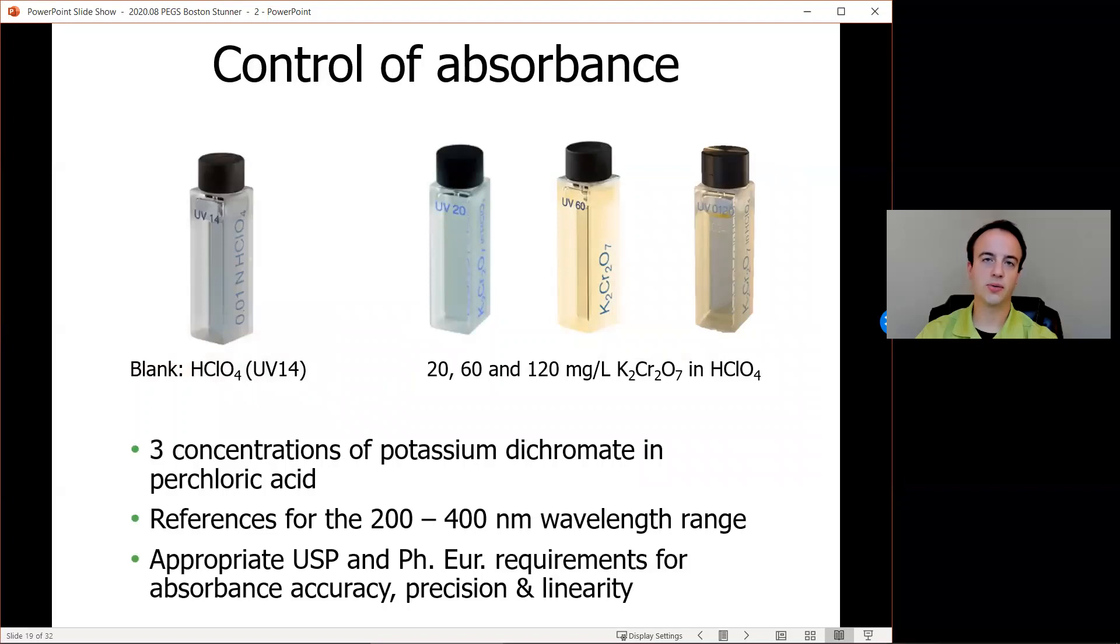To look at how well we're measuring absorbance, we have standards that meet the USP and European Pharmacopeia requirements for absorbance accuracy, precision, and linearity. In this case, it's three concentrations of potassium dichromate in perchloric acid. Those are going to be references called UV-20, UV-60, and UV-120. That will cover measurements we need to take in the 200 to 400 nanometer range.